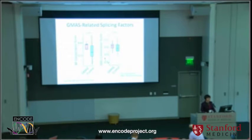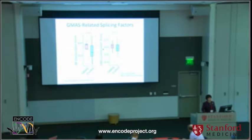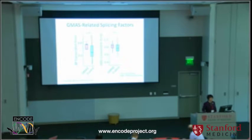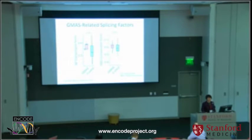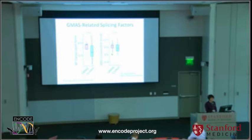Regarding conservation patterns of splicing factors: for the predicted GMS events, I said they are evolving faster and their conservation level is less than controls. But for the splicing factors themselves, it's the opposite — these splicing factors tend to be conserved at higher levels than other splicing factors not predicted as regulators of GMS events.